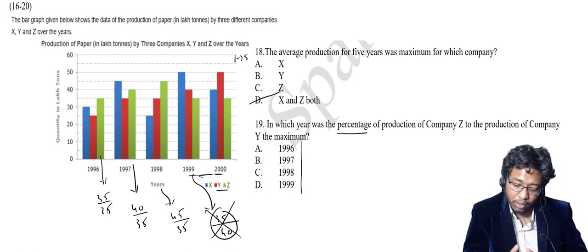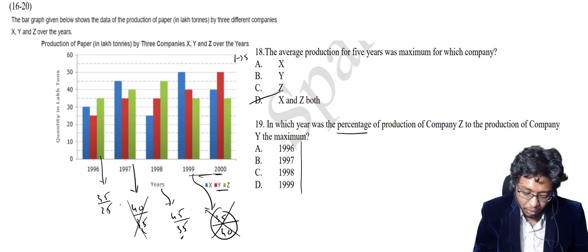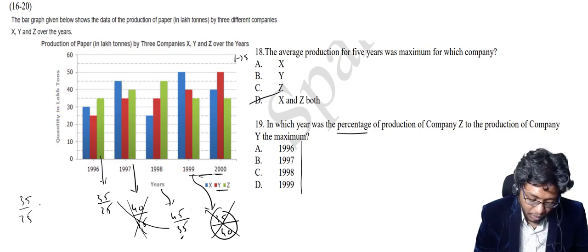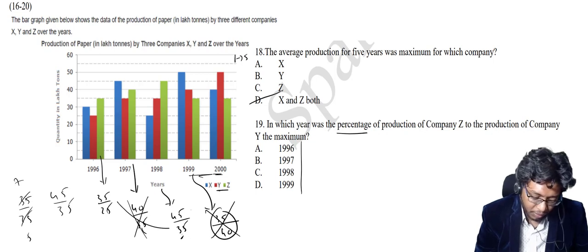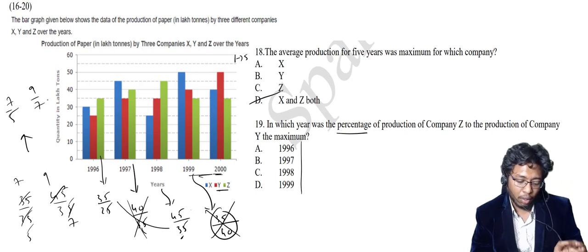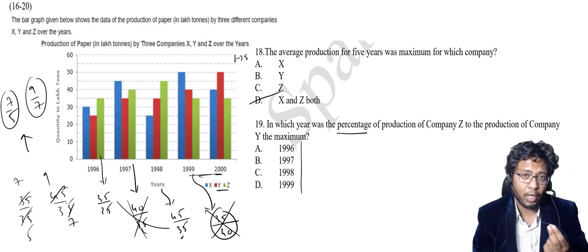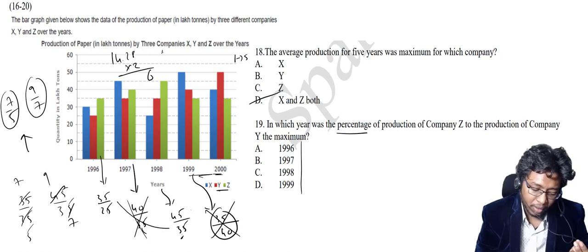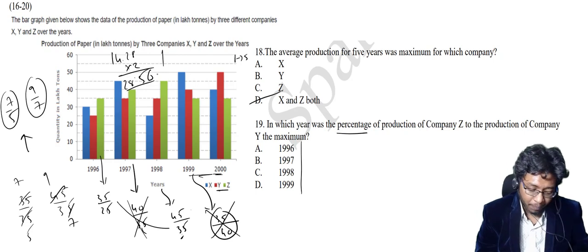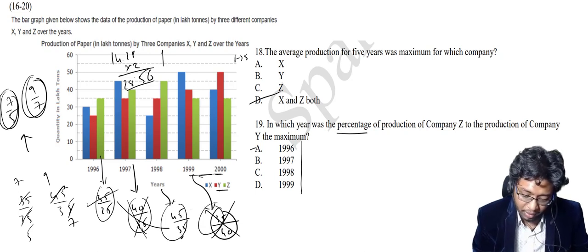He is asking in which year the percentage of production of company Z to production of Y is maximum. Here 35 appears in both numerator and denominator in two of the fractions, so cancel those. You are left with 35 by 25 = 7 by 5 and 45 by 35 = 9 by 7. For 7 by 5: increase is 2 by 5 into 100 = 40%. For 9 by 7: increase is 2 by 7 into 100 = 28.56%. So the maximum is 40%, and the answer is 1996. Without using a calculator we are able to write the answer directly.